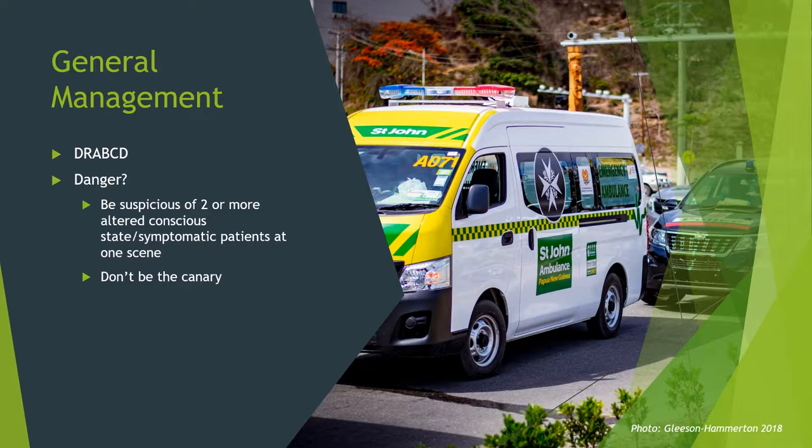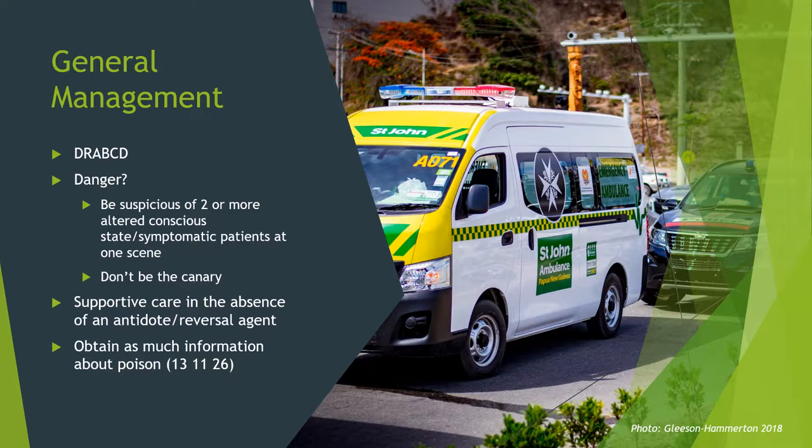Generally, pre-hospital care is mostly supportive in nature. In the absence of a specific antidote or reversal agent, we really only have atropine and naloxone, though oxygen could be considered an antidote in carbon monoxide poisoning, and some services carry amyl nitrate or sodium nitrite for hydrogen cyanide. We also need to obtain as much information about the poison as possible. In South Australia we can call the Poisons Information Centre on 131 126. We need to know exactly what chemicals were ingested, when, and how much. Poisons Information can provide excellent advice including secondary exposure risks and signs to look out for.